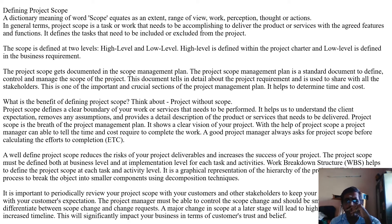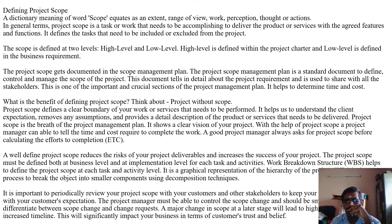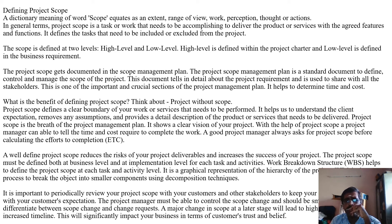The scope of the project must be defined both at the business level and the implementation level for each task and activity. The Work Breakdown Structure, or WBS, means all activities can be broken into small pieces and measured in total. The project is broken down or split into separate phases, with milestones marking when complete activities have been done. WBS helps to define the project scope at each task and activity level. It is a graphical representation of the hierarchy of the project, using decomposition techniques to break objectives into smaller components.